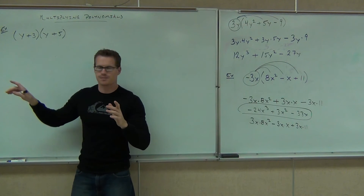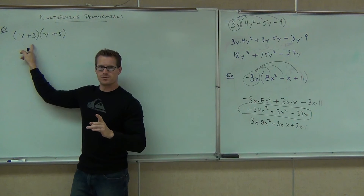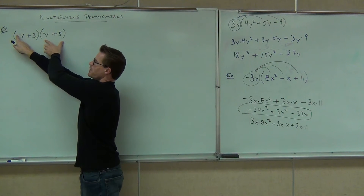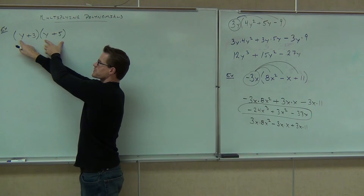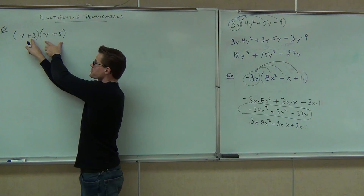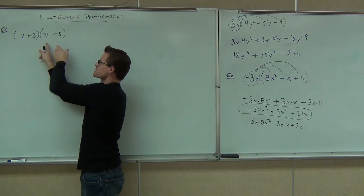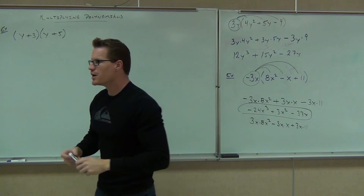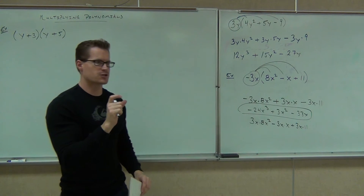That means this — what's my first term? Y. What's the first term in the second polynomial? Y. I'd have to multiply Y times Y. I'd also have to multiply this first term times this second term: Y times 5. I'd also have to multiply this three times that first term Y, and the three times this five. I've got to hit every combination of terms times terms — that's what we've got to do.